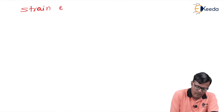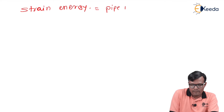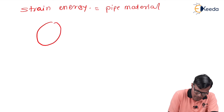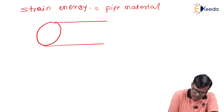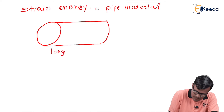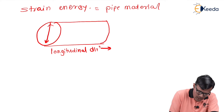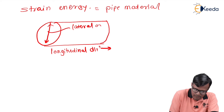First of all, let us revise some concepts in strength of material in which elasticity of pipe is considered. We will start with strain energy. When we consider the pipe material, this is the longitudinal direction, and this direction is called the lateral or transverse direction.